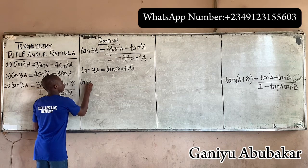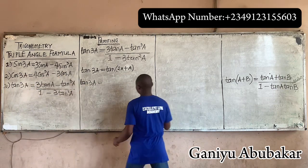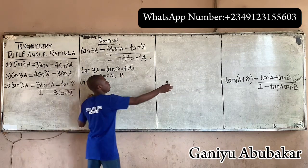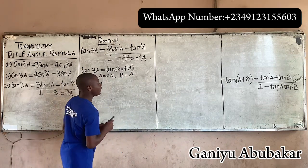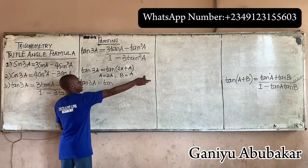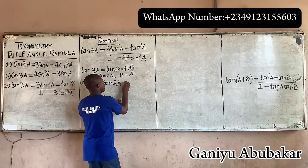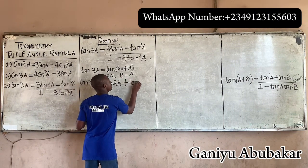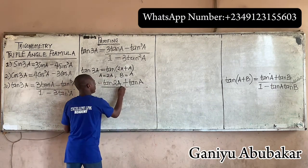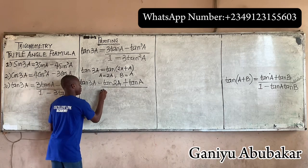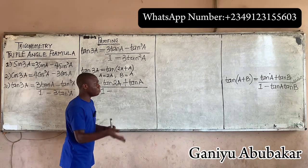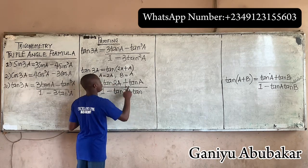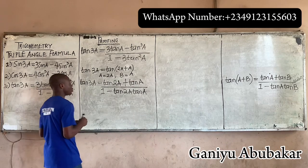So tan(3a) can now be expressed using the compound angle formula. Anywhere I see a, I put 2a; anywhere I see b, I put just a. So I have tan(2a) plus tan(a), all over 1 minus tan(2a)·tan(a).